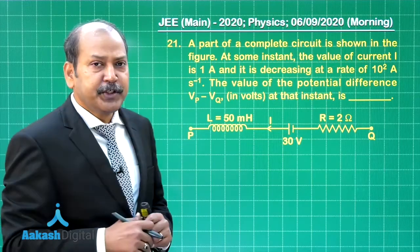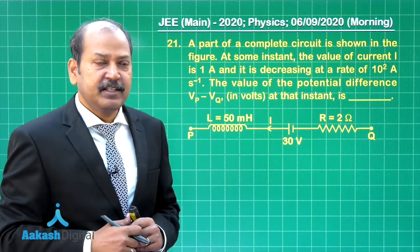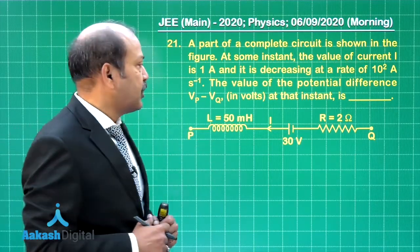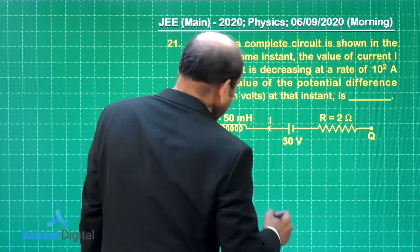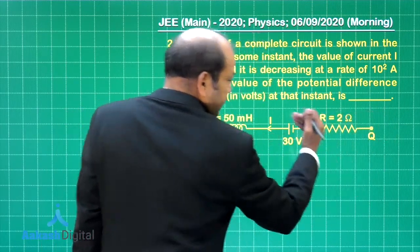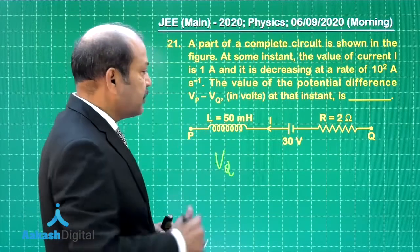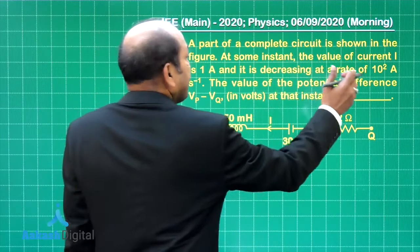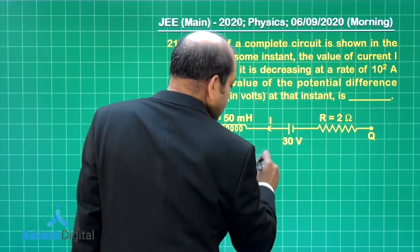Let us start from point q and go on adding all changes in potential and then reach point p. In the process we will get the value of V p minus V q. Starting from point q the potential of point q is V q and since we are moving in the direction of current across the resistance there is a drop in the potential. That means the change is minus i into r. The value of i at the instant is 1 ampere. So that means 1 into 2. So the drop is of 2 volt.